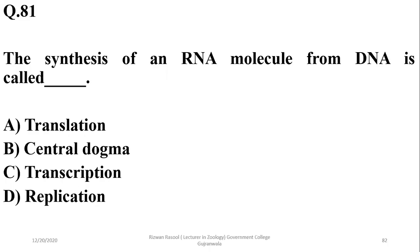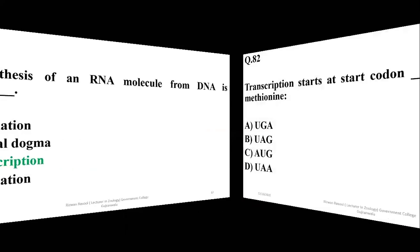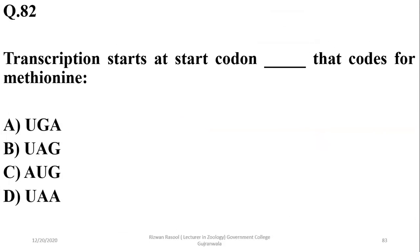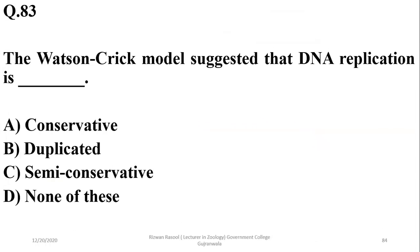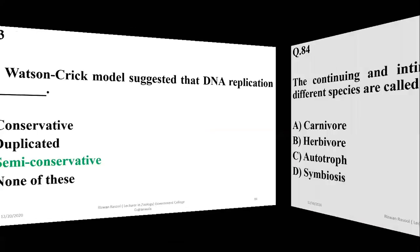Question 81: The synthesis of an RNA molecule from DNA is called transcription, and transcription starts at the start codon AUG. Question 82: The Watson-Crick model suggests that DNA replication is semi-conservative — option C.